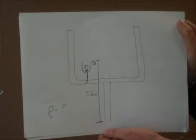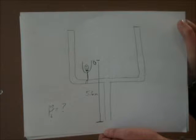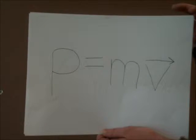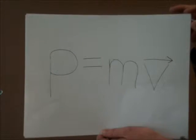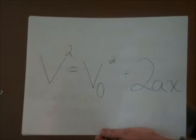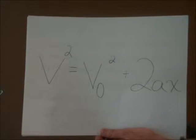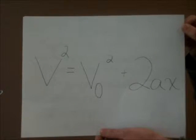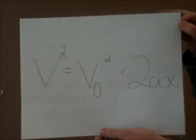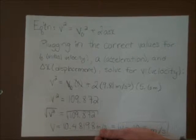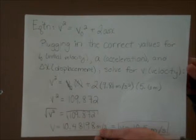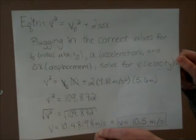Let's say Mr. Keating released the ball 5.6 meters above the ground. How much momentum does the ball have right before it hits the ground? Using the equation momentum equals mass times velocity, we can solve for the momentum. But first, we need to solve for the velocity using the kinematic equation: velocity squared equals initial velocity squared plus 2 times acceleration times displacement. Plugging in the correct values for initial velocity, acceleration, and displacement, we can solve for the velocity.